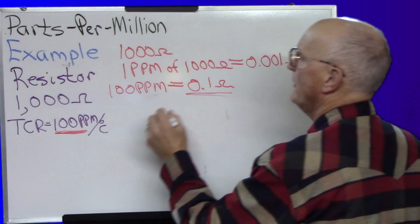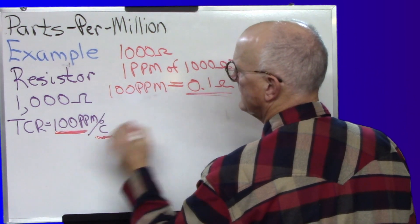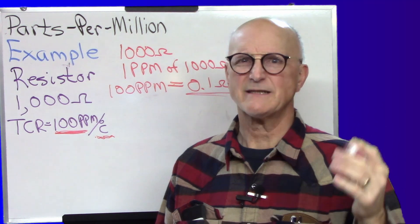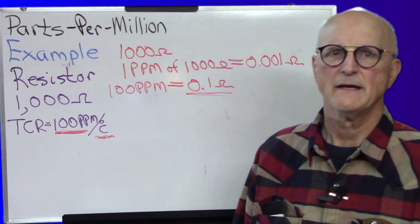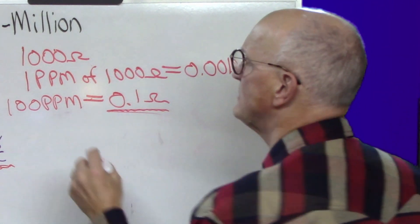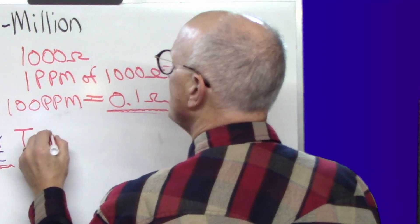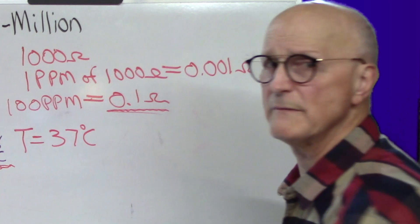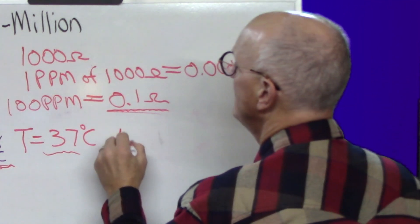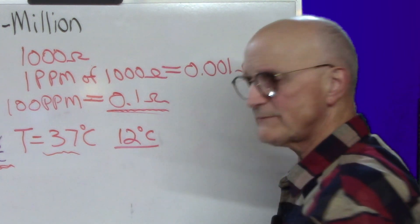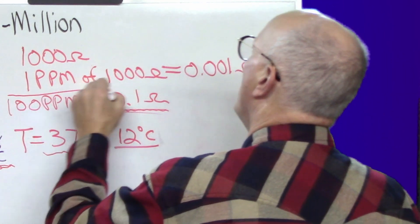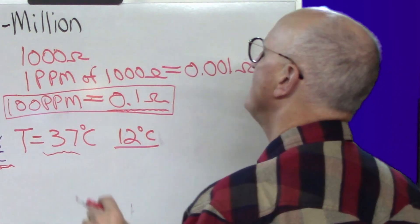That means that for every degree Celsius above 25 degrees Celsius, because that's the starting point, that's about 77 degrees Fahrenheit, the resistor value will be 0.1 ohms greater. So suppose we had a temperature equal to 37 degrees Celsius. That's pretty warm. But the resistor temperature is 37 degrees Celsius. That is 12 degrees Celsius higher than the 25 degree starting point.